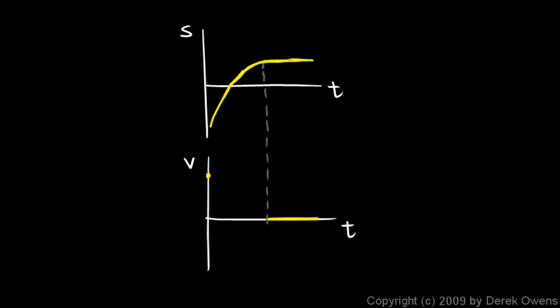I'll draw my velocity graph starting at a pretty high value and then going down. If this section of the curve were parabolic, then this section of the velocity curve would be straight. If we had actual numbers on here, you could take any point — say this moment in time — and at that point my s graph has a certain steepness. The v graph would have that value at that moment. So if the slope of that little segment right there were numerically equal to 3, then my v graph at that moment in time would have a value of 3.